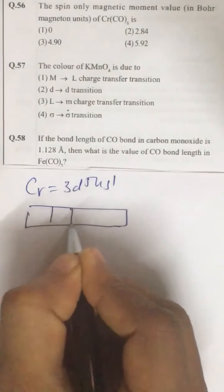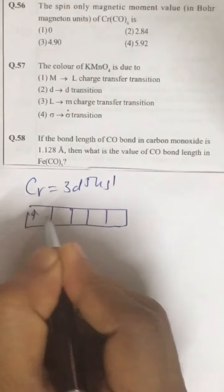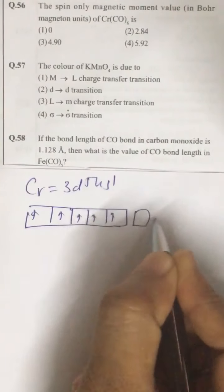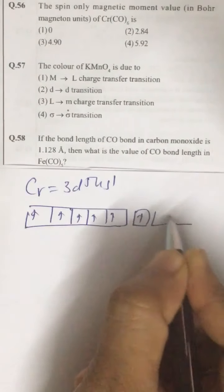1, 2, 3, 4, 5. This is the configuration. This is 4S1 and this is 4P3.